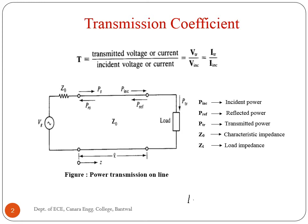Here, 1 is the amplitude of the incident wave, and the reflection coefficient is the amplitude of the reflected wave.